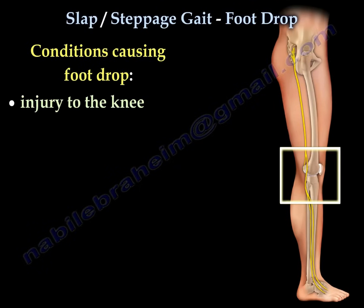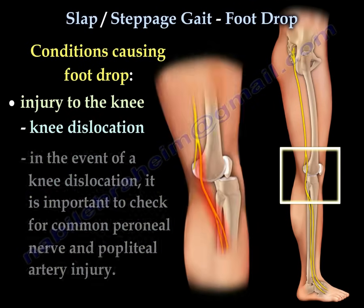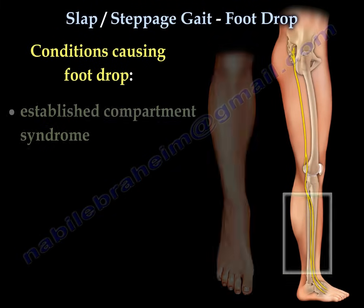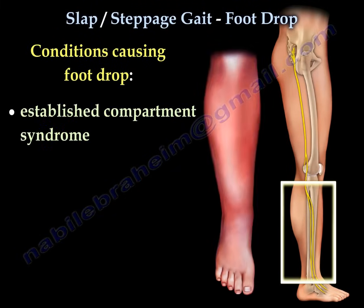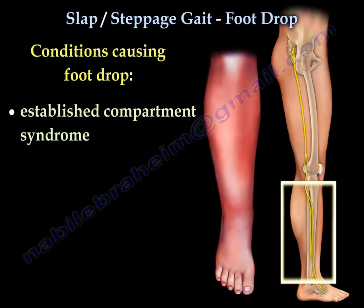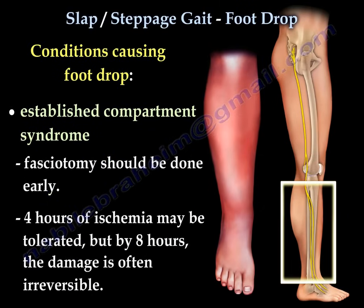Foot drop may also occur due to knee dislocation. In the event of a knee dislocation, it is important to check for common peroneal nerve and popliteal artery injury. In established compartment syndrome, foot drop is a late finding. Ischemia of more than 6-8 hours may cause irreversible changes to the muscles. Fasciotomy should be done early — 4 hours of ischemia may be tolerated, but by 8 hours the damage is often irreversible.